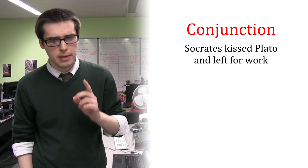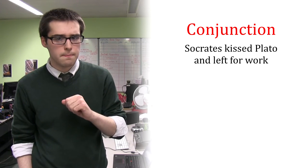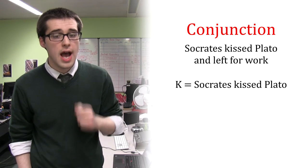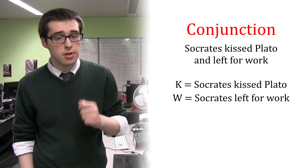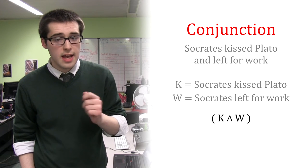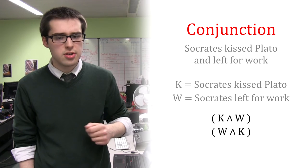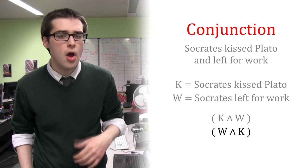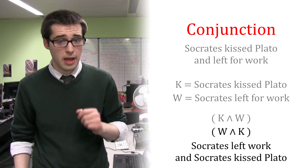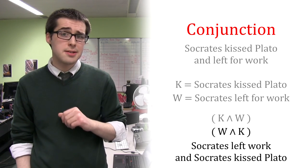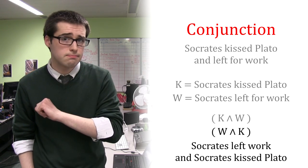For example, Socrates kissed Plato and left for work, where K stands for Socrates kissed Plato and W stands for Socrates left for work. K and W and W and K are both correct translations, despite the latter meaning Socrates left for work and Socrates kissed Plato, which belies the temporal order implied by the natural language statement.